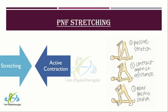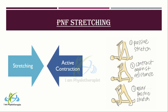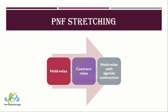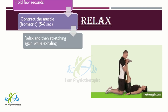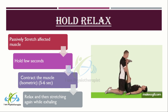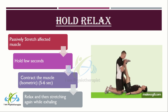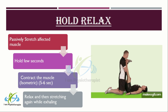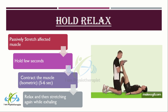Proprioceptive neuromuscular facilitation (PNF) is a more advanced form of flexibility training. PNF involves both stretching and contracting of the muscle group being targeted in order to achieve maximum static flexibility. The three main PNF techniques are hold-relax, contract-relax, and hold-relax with agonist contraction. The hold-relax technique involves putting a muscle in a stretched position passively and holding for a few seconds, then contracting the muscle isometrically — such as pushing gently against the stretch without actually moving. This triggers a reflex, providing a 6 to 10 second window for a beyond-normal stretch, followed by relaxing the stretch for 20 seconds before performing another PNF repetition.